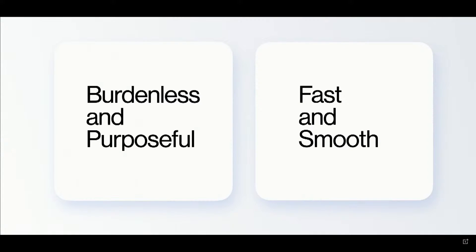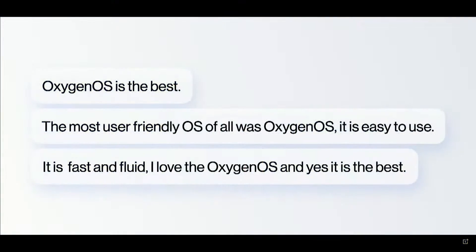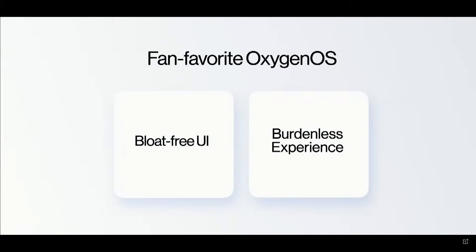Driven by our burdenless and purposeful design philosophy, we have aimed to deliver a truly important, fast and smooth operating system. Things like our iconic fast and smooth OxygenOS DNA, our bloat-free UI and the burdenless experience are not only fan favorites — they are also the key reason why people choose OnePlus as a brand.